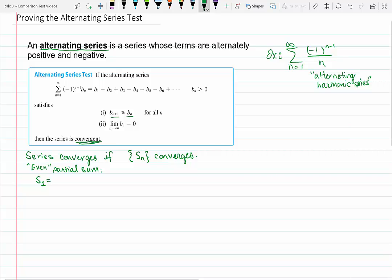That's gonna be the first term B1 minus B2. We know that B2 is less than or equal to B1, so I'd like to point out that we know that B1 minus B2 is a positive number, so S2 is positive.